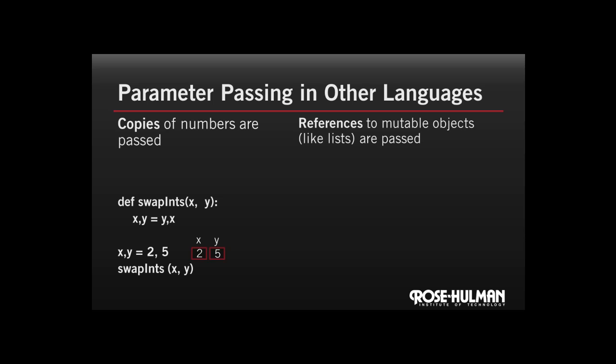When the call is made to swapInts, what happens is that copies of those integers are passed up there. Now you'll notice that inside swapInts, we can change those values all we want. But the original values down below, say in main, remain unchanged.